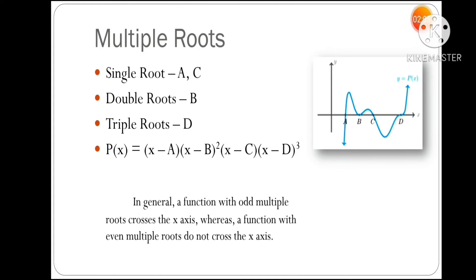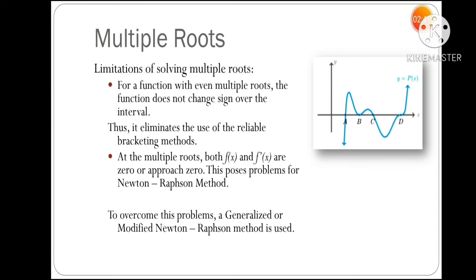Multiple roots means that at a single point you get two or more roots. There is a lot of difference between single and multiple roots in terms of system characteristics, which we won't cover in detail now. When we try to find multiple roots using numerical methods, we encounter some limitations.